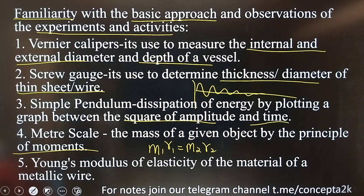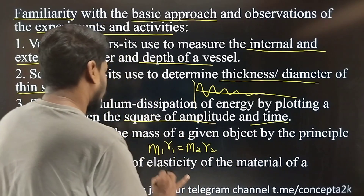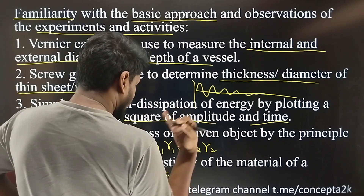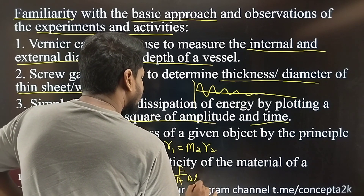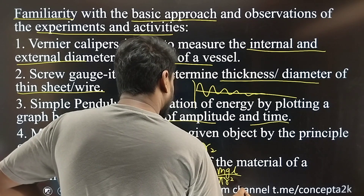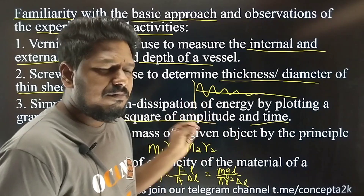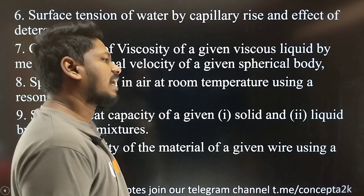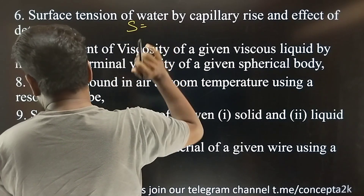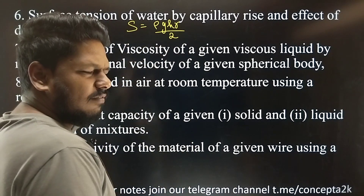Young's modulus of elasticity of the material of a metallic wire — if you use the formula: Y = stress / strain = (F/A) / (ΔL/L) = MgL / (A × π r² × ΔL). So this is the formula. The experiment is surface tension of water by capillary rise method. The formula is T = ρgh·r / 2.